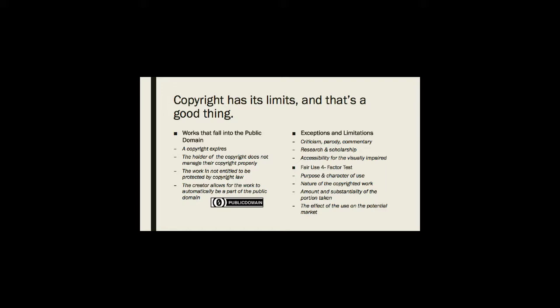A work can enter the public domain in four ways: the copyright expires; the holder of the copyright does not renew their copyright or otherwise follow the rules to protect their copyright; the work is not entitled to be protected by copyright law — for example, in the U.S., that is any work created by a federal government employee; or the creator allows for the work to automatically be part of the public domain. Creative Commons has a CC0 button that assists authors in making their work available to all without a copyright.